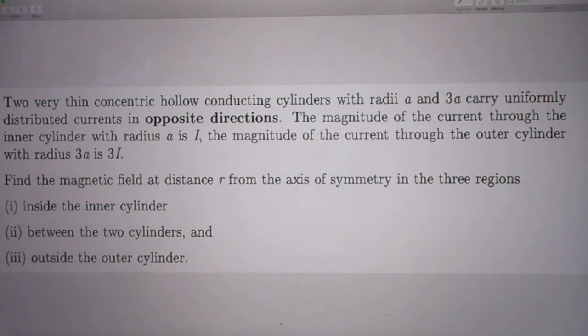Two very thin, concentric, hollow conducting cylinders with radii A and 3A carry uniformly distributed currents in opposite directions. The magnitude of the current through the inner cylinder with radius A is I. The magnitude of the current through the outer cylinder with radius 3A is 3I.